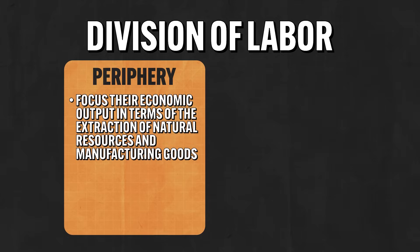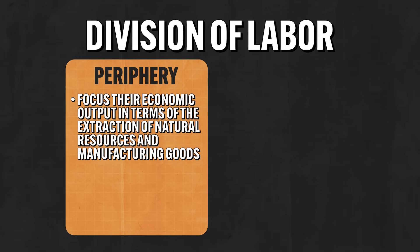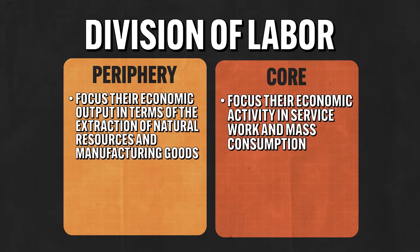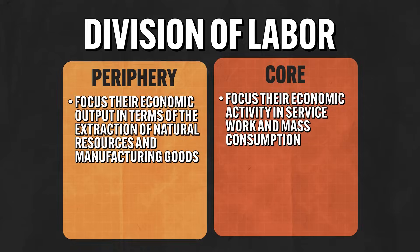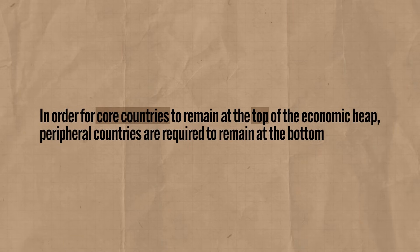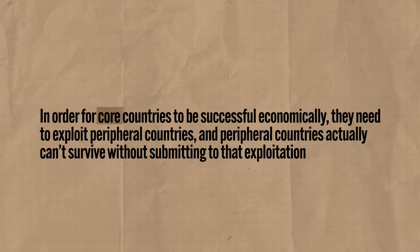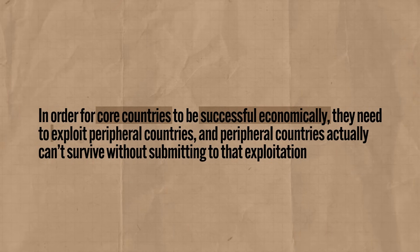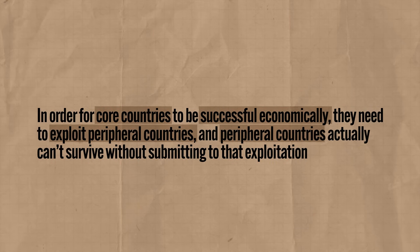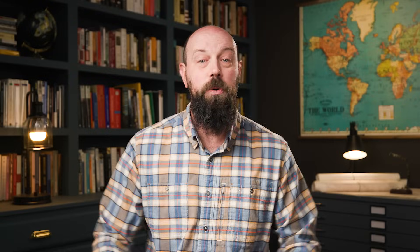Countries in the periphery tend to focus their economic output on extraction of natural resources and manufacturing goods — that's their part of the division of labor. Core countries tend to focus their economic activity on service work and mass consumption. This is a delicate balance: if one part of the global economy doesn't play its part, the whole thing goes wonky in a hurry. According to Dependency Theory, differing levels of development exist precisely because of the international division of labor. In order for core countries to remain at the top, peripheral countries are required to remain at the bottom. Core countries need to exploit peripheral countries, and peripheral countries actually can't survive without submitting to that exploitation. Dependency Theory is better than Rostow because it recognizes the interconnectedness of the world's various economies.